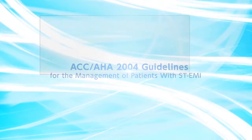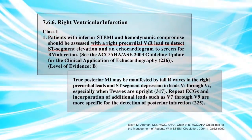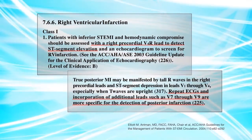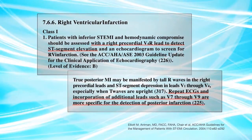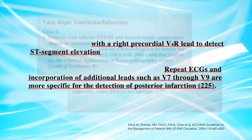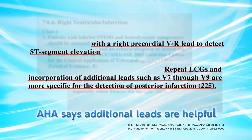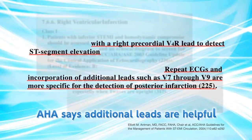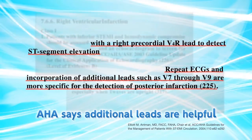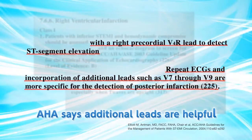The ACC/AHA 2004 guidelines for the management of patients with ST elevation myocardial infarction describe the importance of additional right-side and back leads in ECG diagnosis of myocardial infarction. Lead V4R should be used to assess ST elevation, and V7 to V9 are helpful for posterior infarction.